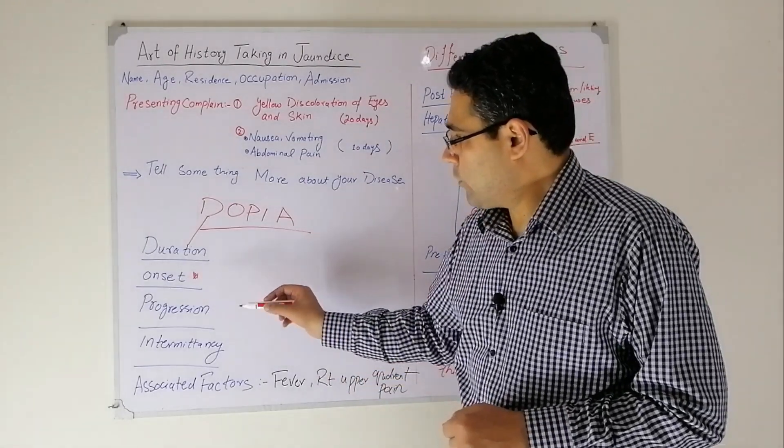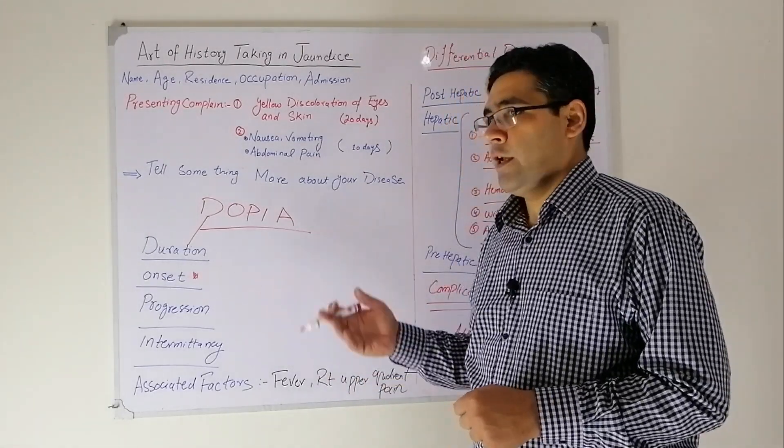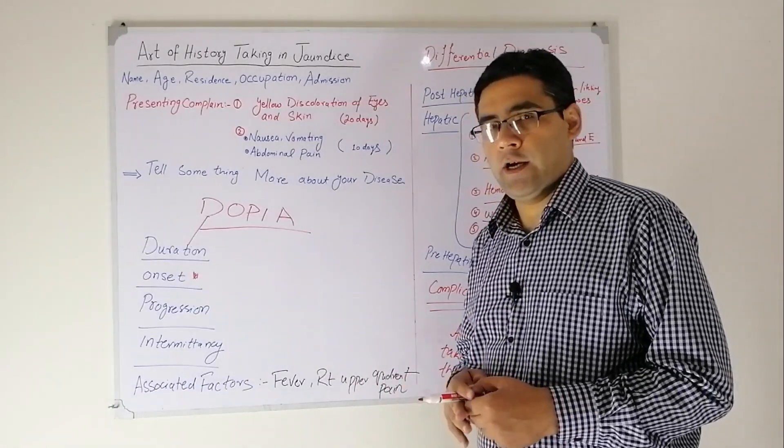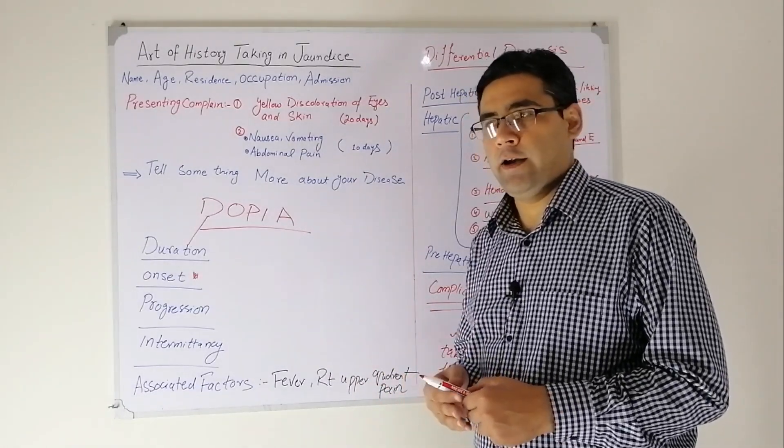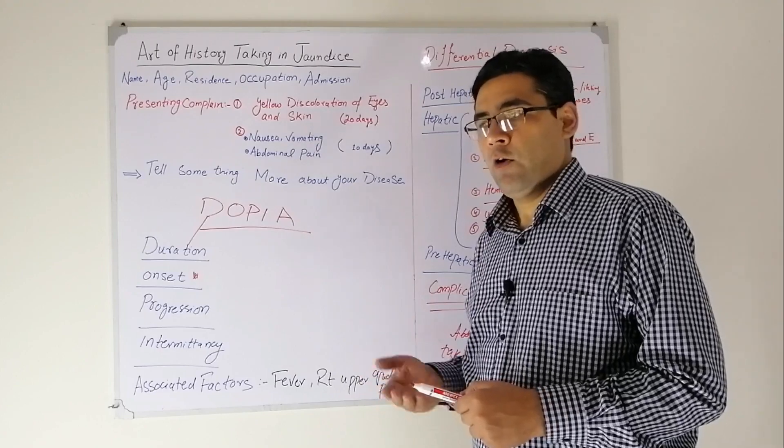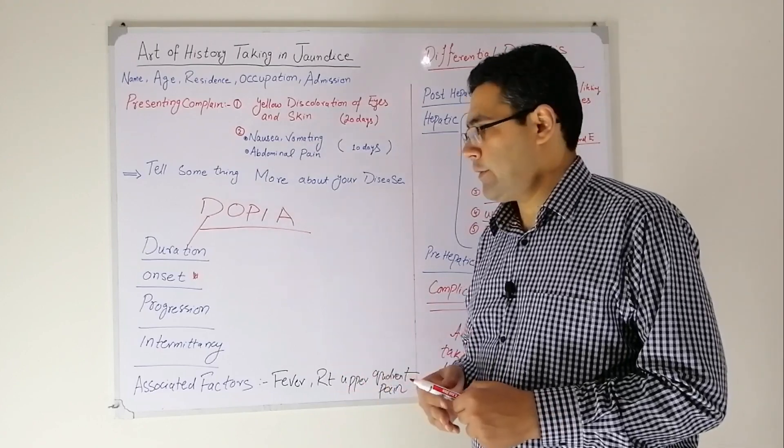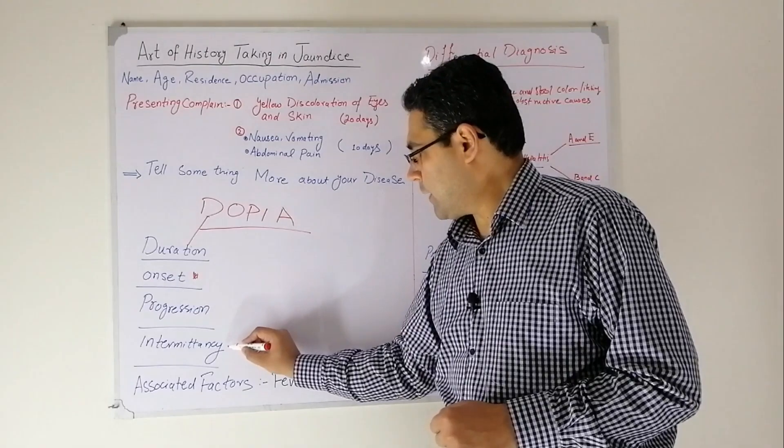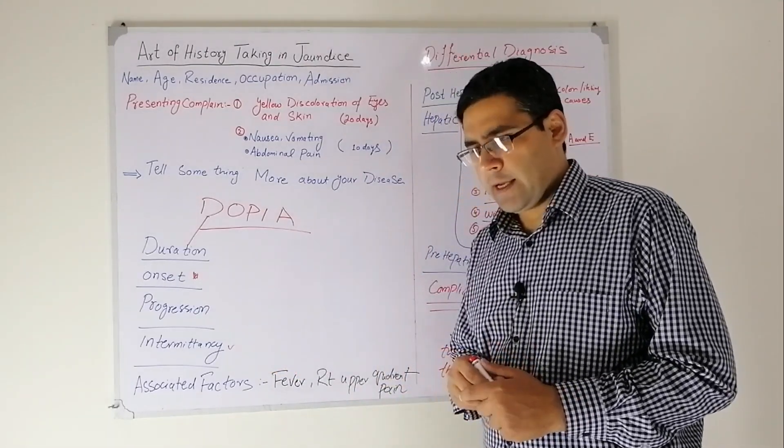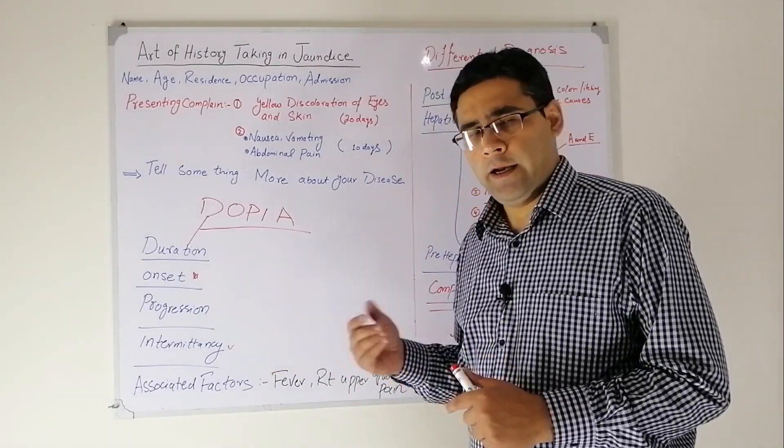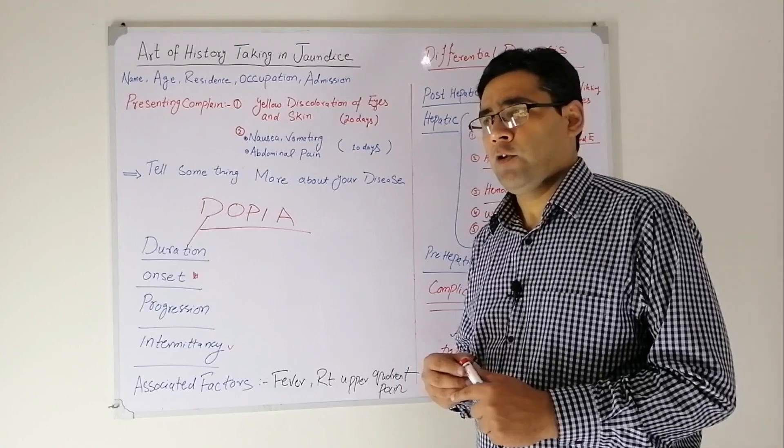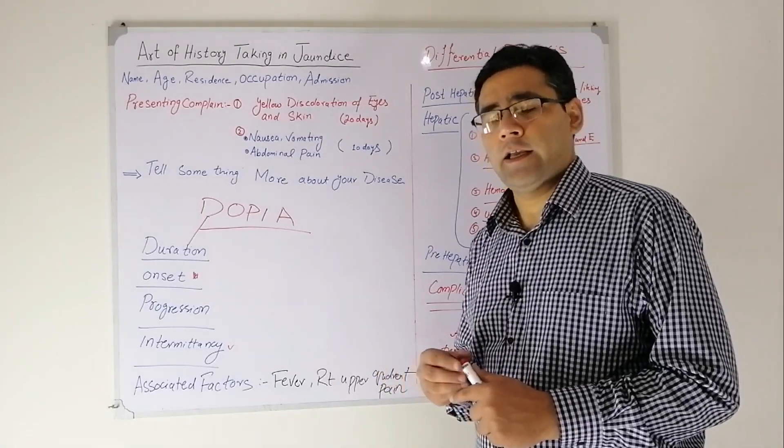Later on, you will ask about the progression. Ask the patient since the jaundice has started, is it increasing or does it have a decreasing trend. Then comes the intermittency.